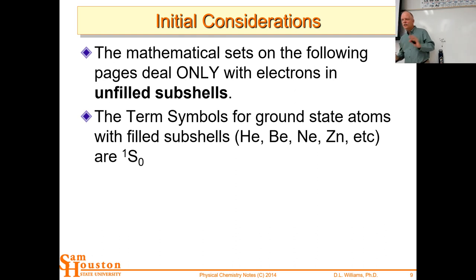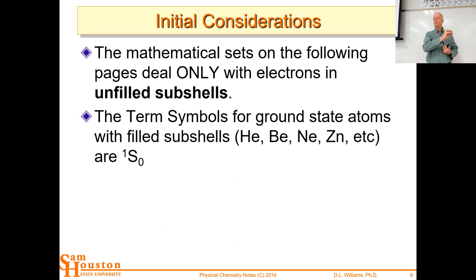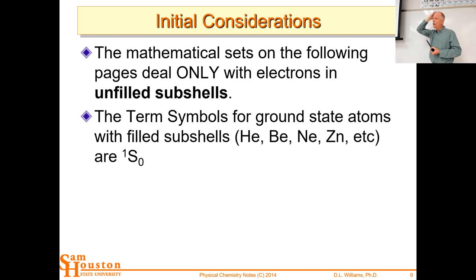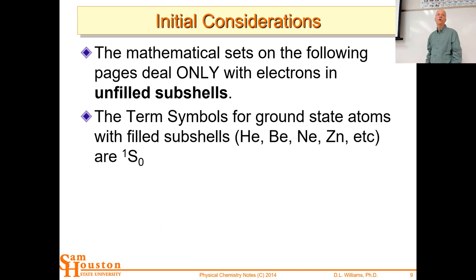These term symbol calculations only deal with electrons in unfilled shells. For sodium with 11 electrons, all the ones in filled shells cancel each other out and are happy — we call those the core electrons. We're only dealing with the unpaired valence electrons in unfilled subshells. For sodium, we just have one electron to deal with. For boron, even though it has three valence electrons, there's only one subshell that's unfilled — the p subshell — so you're just dealing with a p¹ system. Don't make the mistake of thinking you have to deal with all the s electrons, because that subshell is filled.